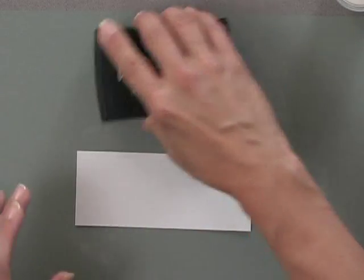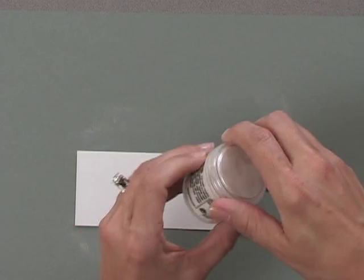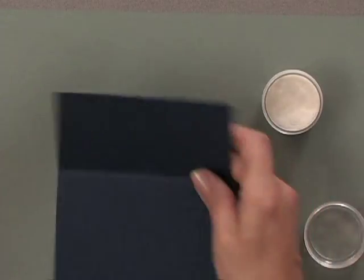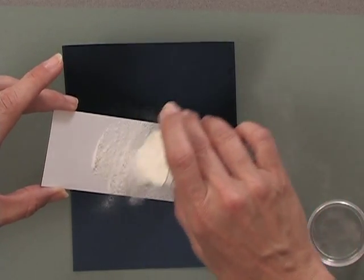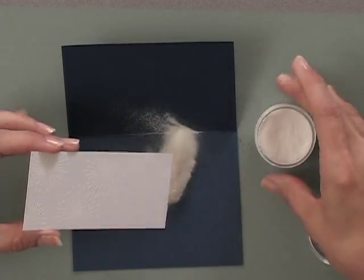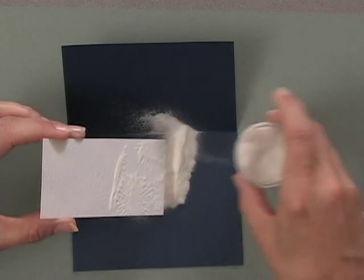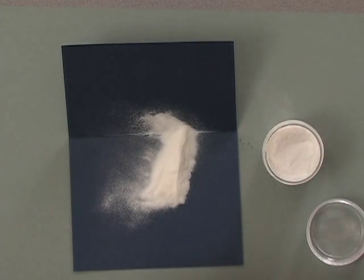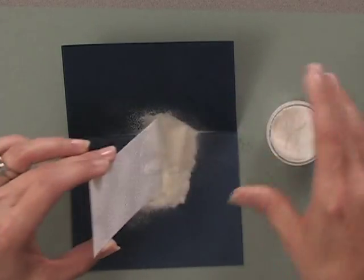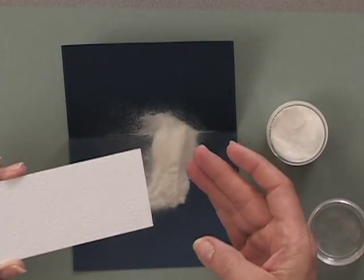So my next step is to take some of this fine detail clear embossing powder. It really is a good idea to use a detail powder when you're using such a delicate image such as this dandelion stamp. I'm going to sprinkle that embossing powder right over my stamped images. Now I'm going to blow away any excess. Let's just put a little bit more powder here. Just check it and make sure it's everywhere you want it to be.